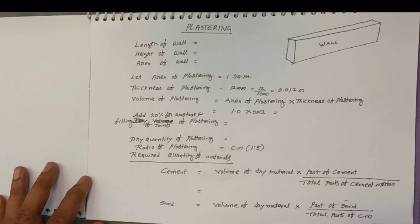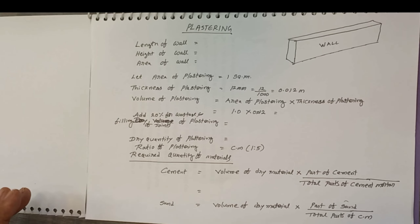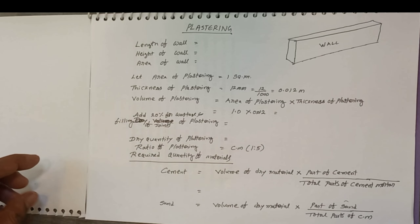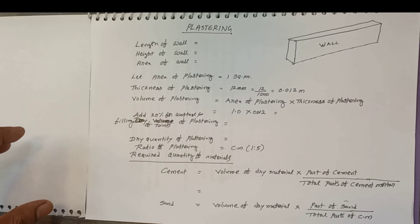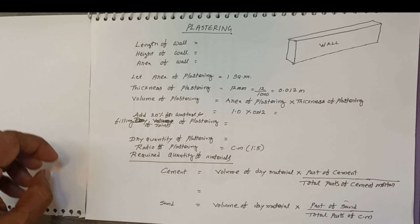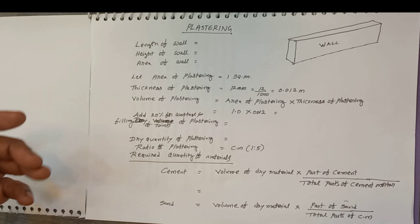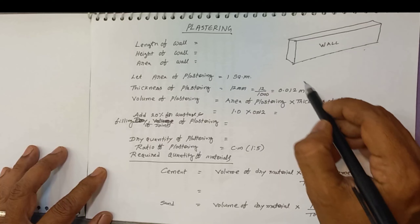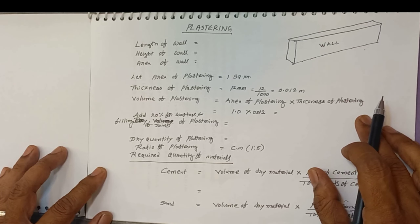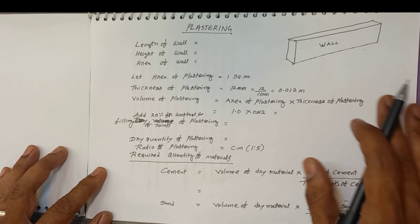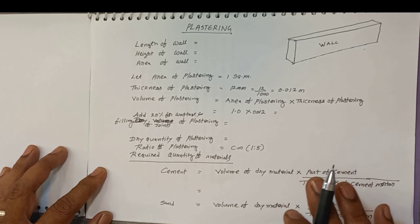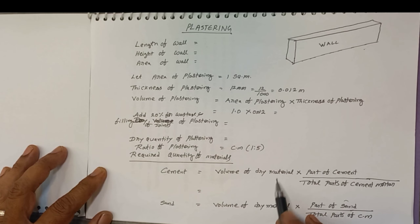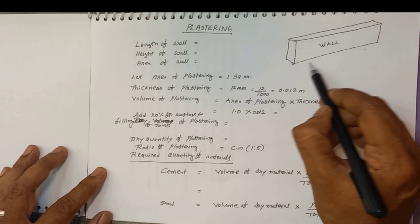Now we will discuss the estimation of plastering areas. We will discuss the material in the wall and the plastic material. Generally, the material is cement and sand. So cement and sand is what we will discuss. Let's see the wall here — suppose this is a wall.